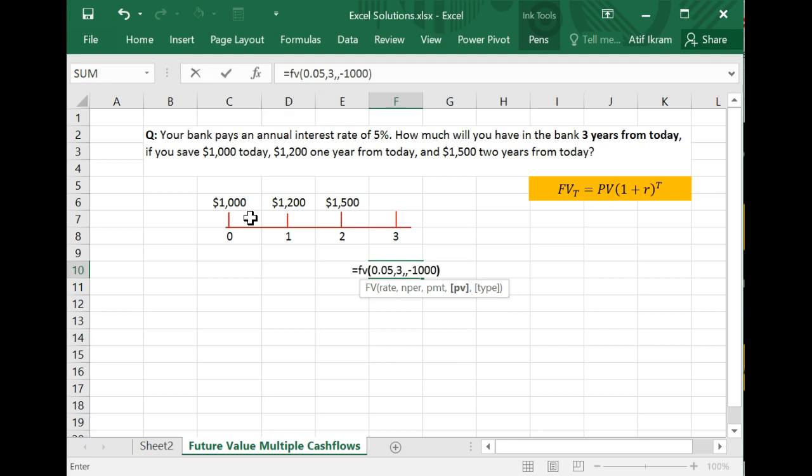And now when you press enter, this basically tells you that at the end of three years, this $1,000 of yours will be $1,157.63 at an annual interest rate of 5%. Now you're not done because this is not the total that you'll have. After one year, you're depositing another $1,200.